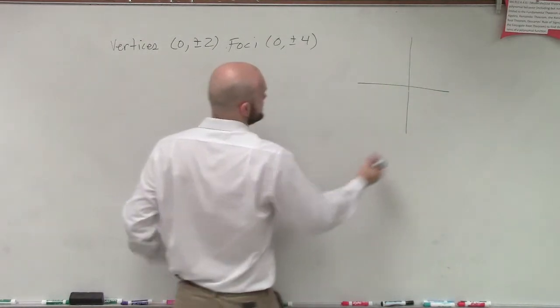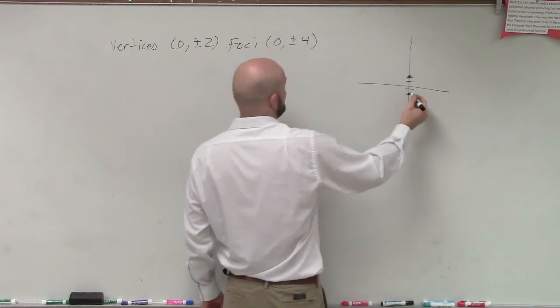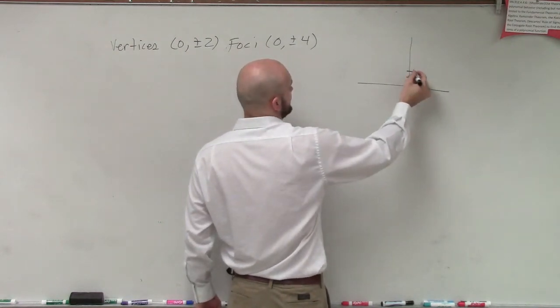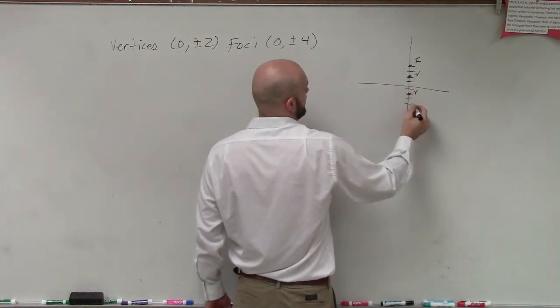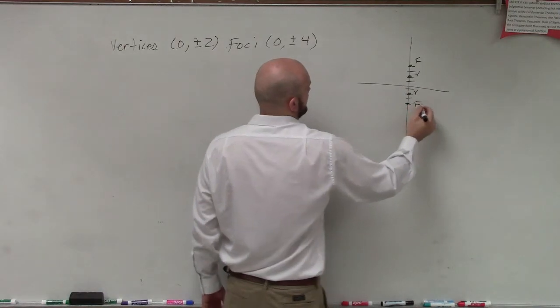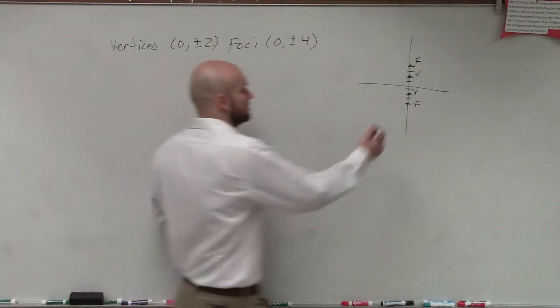If I say my vertices are at (0, 2) and (0, -2), and my foci at (0, 4) and (0, -4), so obviously, ladies and gentlemen, I have to have a hyperbola, right?